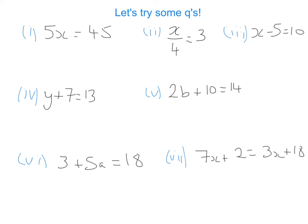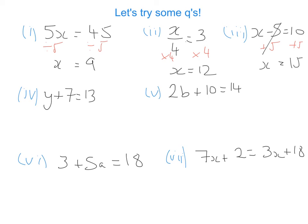For the first one, I'm going to get rid of the 5 multiplied by x by dividing both sides by 5, therefore x equals 9. Next, multiply both sides by 4 to get rid of the divided by 4, therefore x equals 12. Next, get rid of the minus 5 by adding 5 to both sides, so x equals 15. Moving on to number 4, get rid of the plus 7 by minusing 7 from both sides, therefore y equals 6.